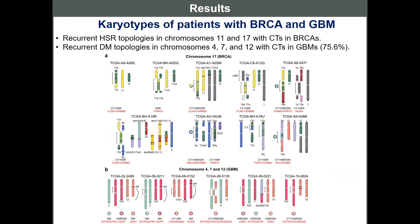GBMs have recurrent double-minute structures in chromosomes 4, 7, and 12, and more than 75% of these patients have double-minute structures which include GBM oncogenes such as EGFR and CDK4.